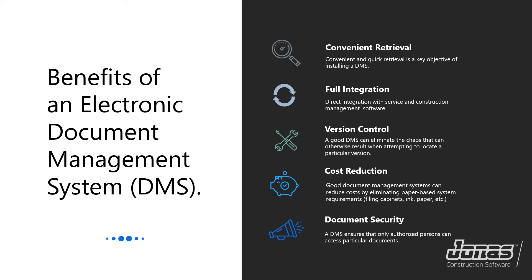The next benefit is cost reduction. Managing a large volume of documents is extremely expensive and wasteful. In a paper-based system, paper, ink, file folders, filing cabinets, and filing staff can be pretty costly, and an electronic DMS can help reduce these costs by eliminating those paper-based requirements. Last but not least, document security is a benefit. Documents can contain business secrets and confidential data such as internal pricing or employees' personal details. A good DMS ensures only authorized persons can access particular documents, and because documents are stored digitally, in the event of a physical disaster such as a fire or flood, you can more easily restore them from a backup.